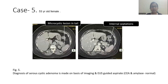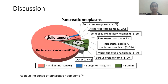Case 5: a 53-year-old female. Here we can see a microcystic lesion in the tail of the pancreas showing internal septation. The diagnosis of serous cystadenoma was made on the basis of imaging and endoscopic ultrasound-guided aspirate, which showed normal carcinoembryonic antigen and amylase.